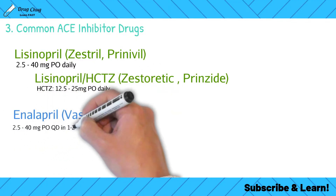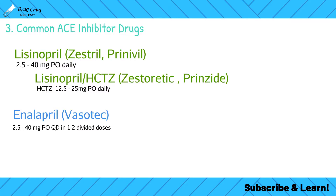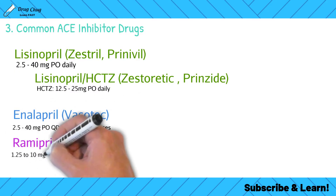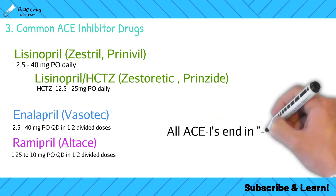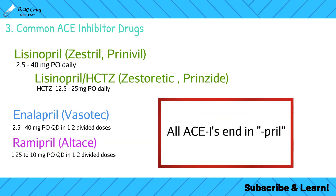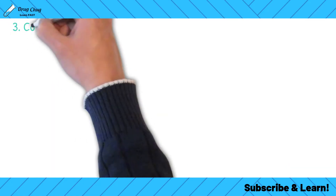The next ACE inhibitor is enalapril, brand name Vasotec, with dosing very similar to lisinopril. Our next ACE inhibitor is ramipril, brand name Altace, with very different dosing — think of it as your 'alternative' ACE inhibitor. Most importantly: all ACE inhibitors end in '-pril' — lisinopril, enalapril, ramipril, and many more.